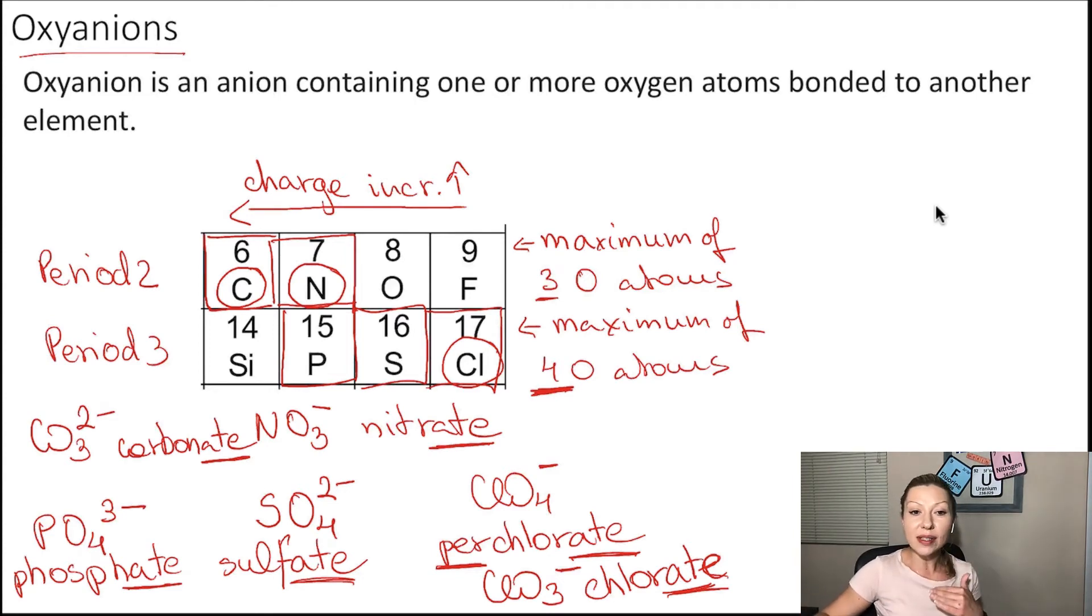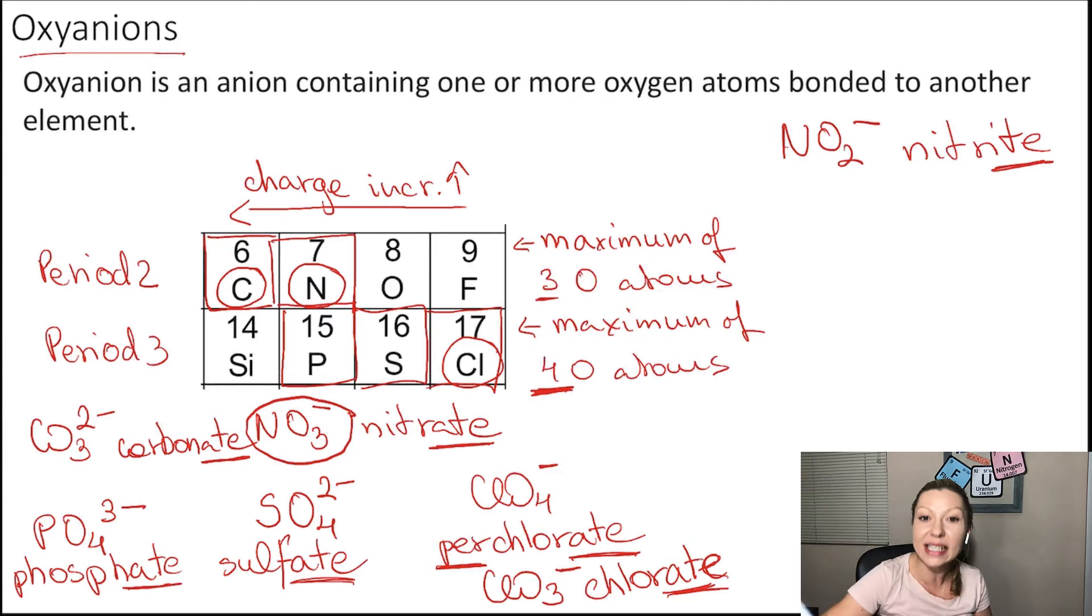What happens if I go one oxygen atom less? So for example, let's take NO3. And let's take away an oxygen atom. So that's going to give me NO2. I'm going to keep the minus one charge. So this is going to be the nitrite ion. So I ended it with -ite.